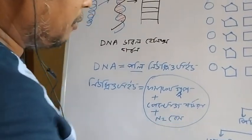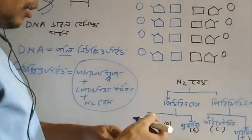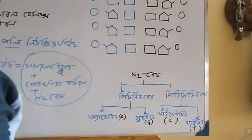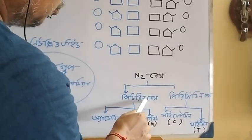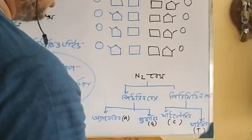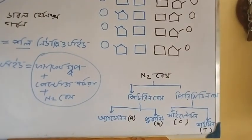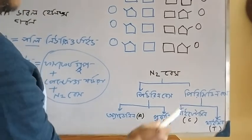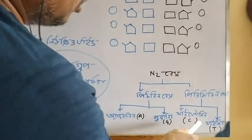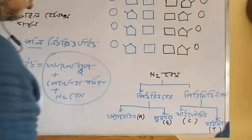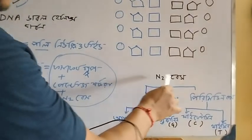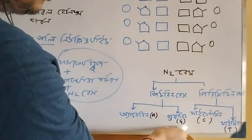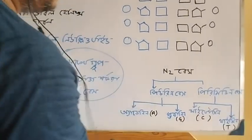Let's see this nitrogen base. There are two types: purine base and pyrimidine base. Purine bases are Adenine and Guanine. Pyrimidine bases are Cytosine and Thymine. So nitrogen has 4 bases: Adenine, Guanine, Cytosine, and Thymine.